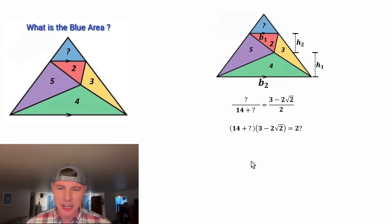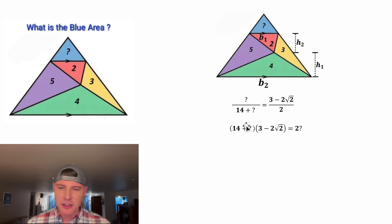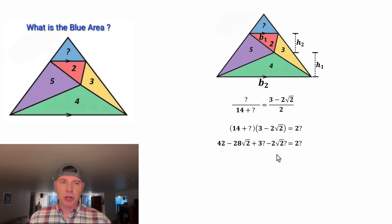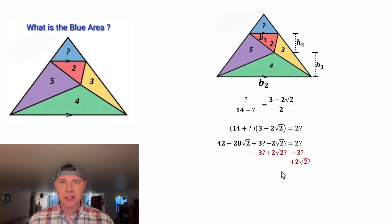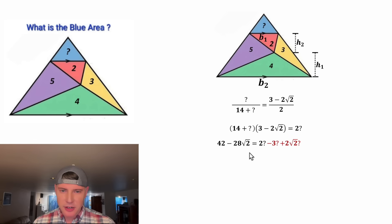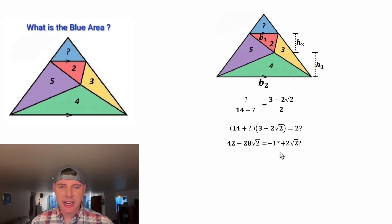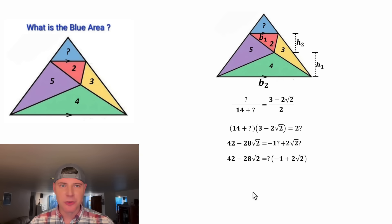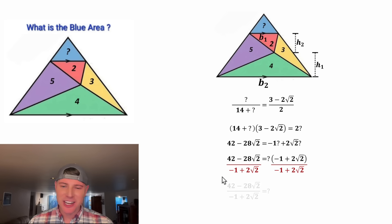Now we have a question mark on both sides, so we need to isolate it. Let's multiply all this out. Now let's move everything with a question mark to the right-hand side by subtracting 3 question mark and adding 2 root 2 question mark. On the left-hand side, all of that cancels out. On the right-hand side, 2 question mark minus 3 question mark is negative 1 question mark. Now everything on the right-hand side has a question mark, so let's factor it out. We're left with negative 1 plus 2 root 2. To get the question mark by itself, let's divide both sides by negative 1 plus 2 root 2.